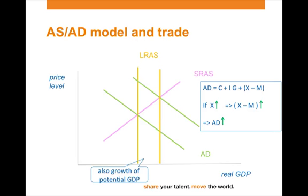However, as the economy now has access to commodities that were non-existent in the country, it also influences the long-run aggregate supply curve. There's growth of potential GDP, therefore a shift of the long-run aggregate supply curve to the right.